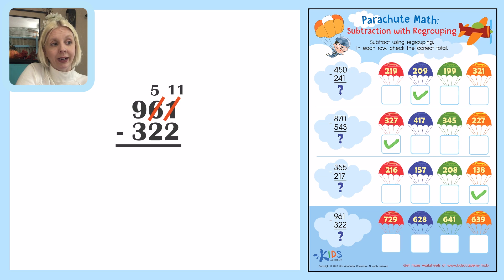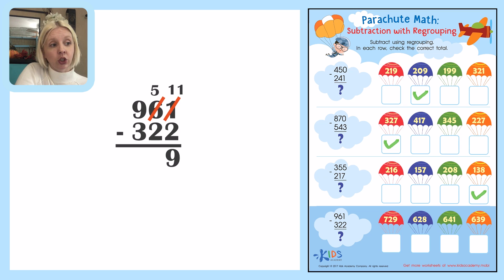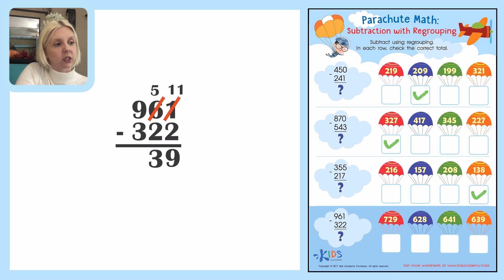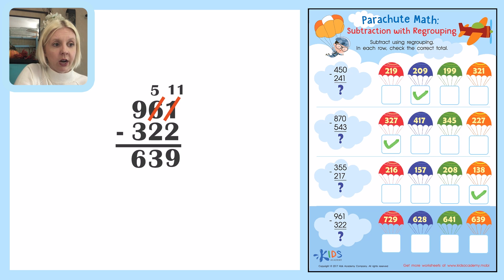So eleven minus two: eleven, ten, nine — so nine in the ones place. Then five minus two is three in the tens place. And in the hundreds place I've got nine minus three — nine, eight, seven, six. So I've got 639. I'm going to find that answer down here — six hundred and thirty-nine. There it is, the last one!